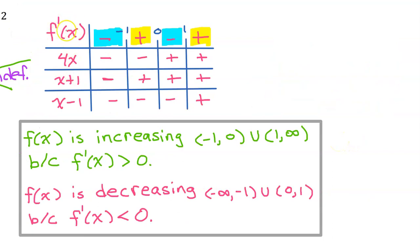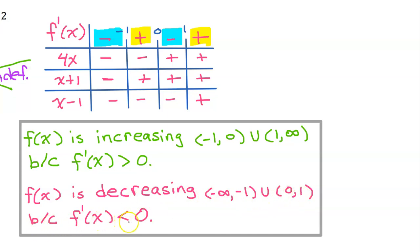I just noticed that I had been calling this y prime on the chart — let's call it f prime. So we say f of x is increasing from negative 1 to 0 and from 1 to infinity because f prime is positive. And f of x is decreasing from negative infinity to negative 1 and from 0 to 1 because f prime is negative.